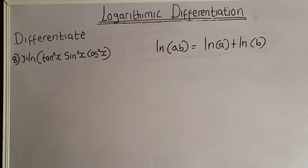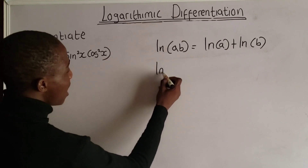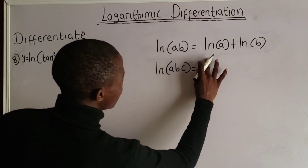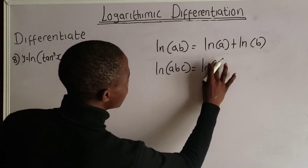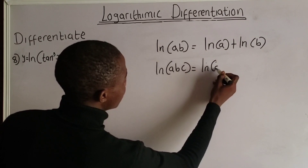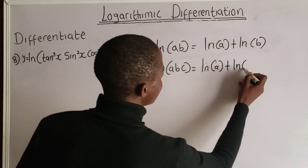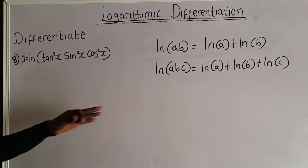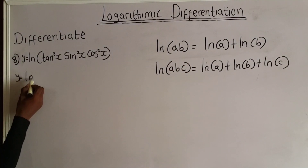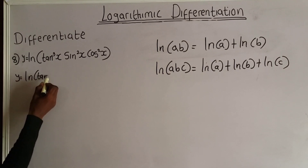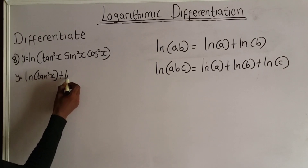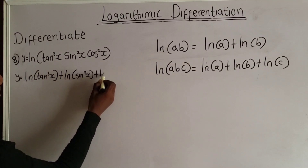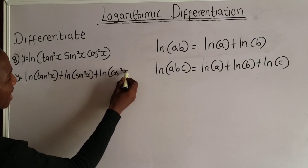Now let us proceed and solve this question. Don't forget that if we have a function like ln(a·b·c), we can express it as the natural log of a plus the natural log of b plus the natural log of c. Using the same approach, y is equal to the natural log of tan³x plus the natural log of sin²x plus the natural log of cos²x.